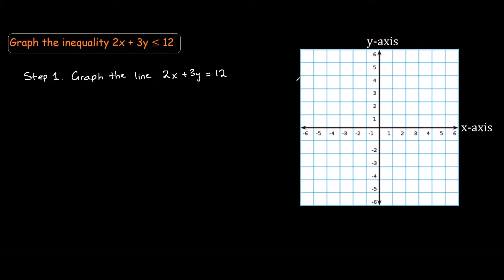There's two ways to graph this line. One is to rearrange it into the form y equals mx plus b, or we could just substitute two x and y values, get two points, and connect those two.